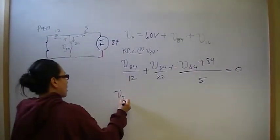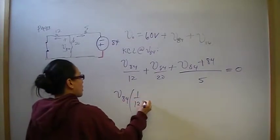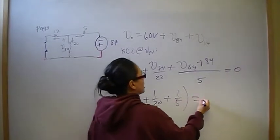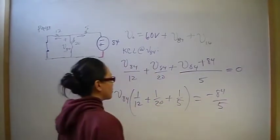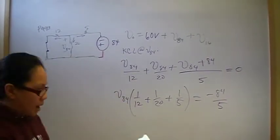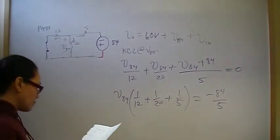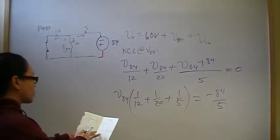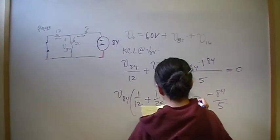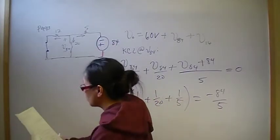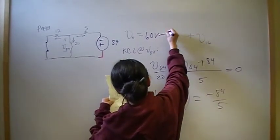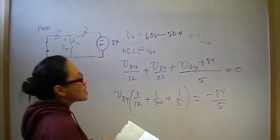And then this part is just algebra. V84, 1/12 plus 1/20 plus 1/5. That's equal to negative 84 over 5. So if you do that, you should come up with V84 is equal to negative 50.4. That's the second piece.